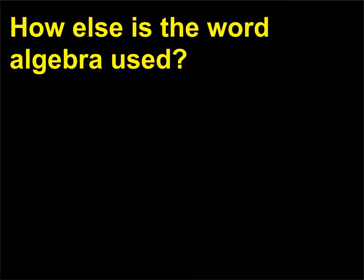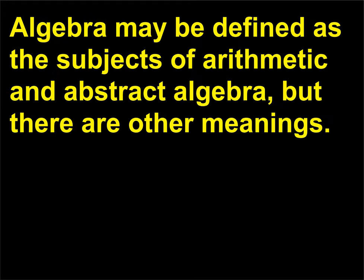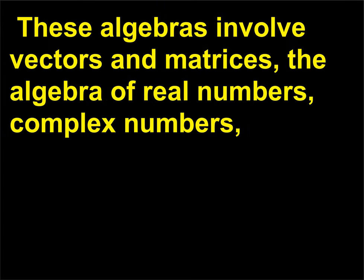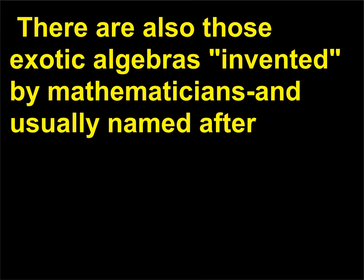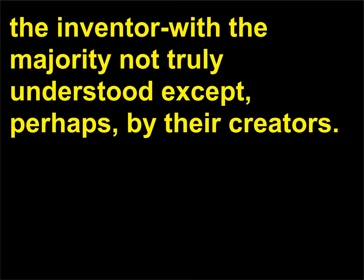How else is the word algebra used? Algebra may be defined as the subjects of arithmetic and abstract algebra, but there are other meanings. These algebras involve vectors and matrices, the algebra of real numbers, complex numbers, and quaternions — an operator or factor that changes one vector into another. There are also those exotic algebras invented by mathematicians, usually named after the inventor, with the majority not truly understood except perhaps by their creators.